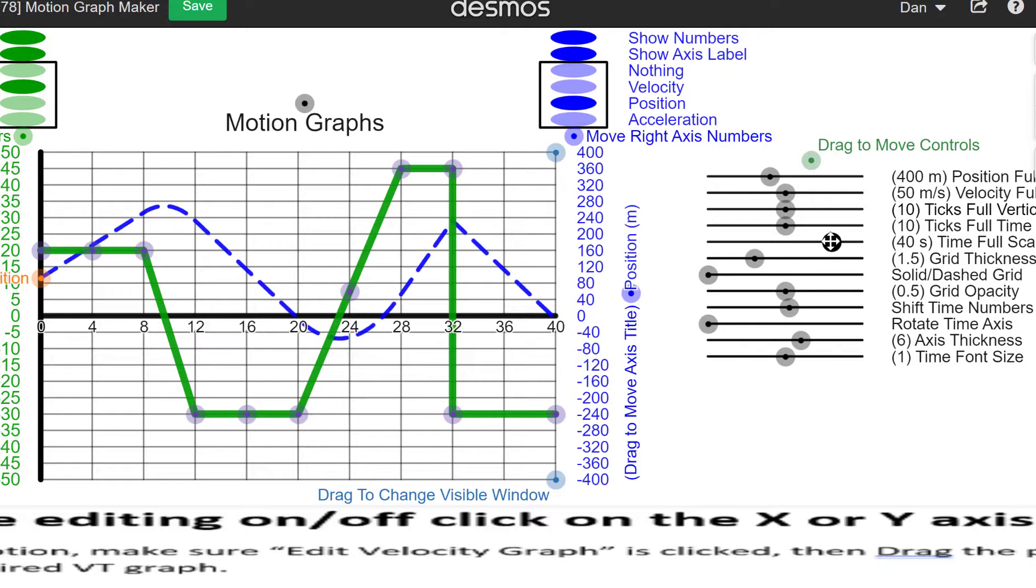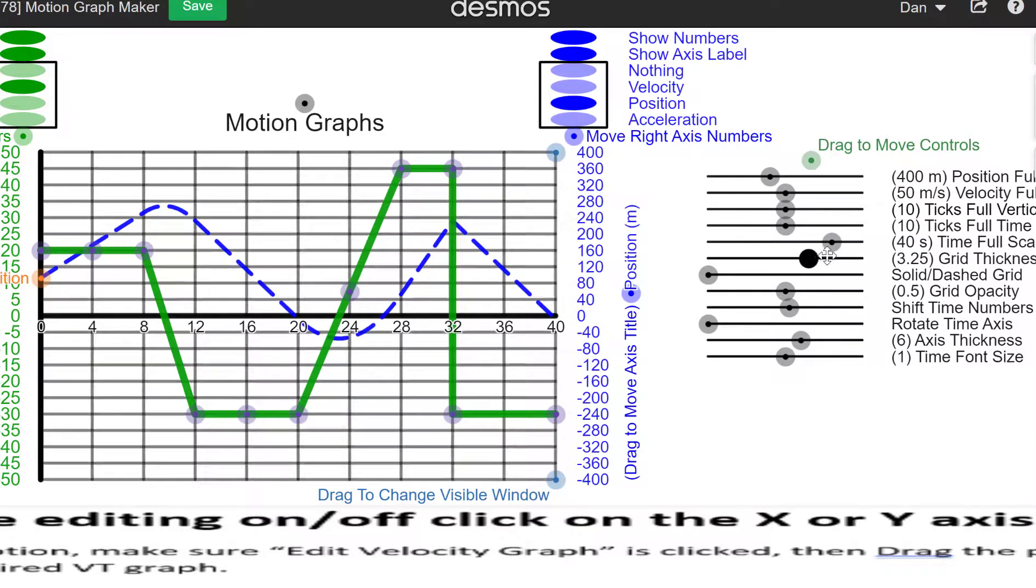Of course, you can change the time represented by the full scale. You can change the thickness of the grid like this. You can change whether it is dashed or dotted. You can change the opacity.